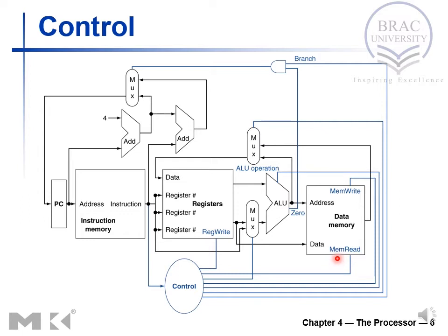If you go to the data memory, you would see we have two signals: memory read and memory write. We need memory read when executing a load operation, because in load we read from memory and write the value back to the register file. To perform a read operation in memory, we need the read signal. And for a store operation, we need the memory write signal enabled.